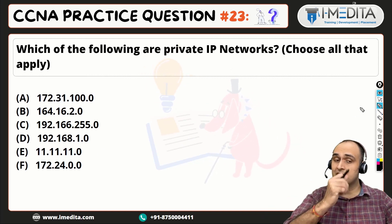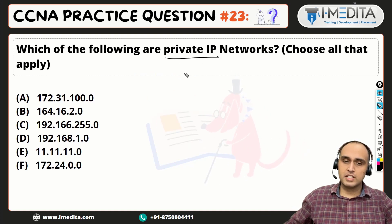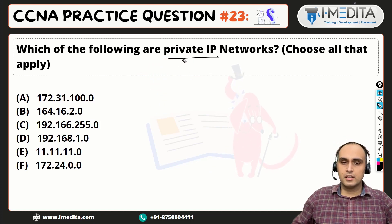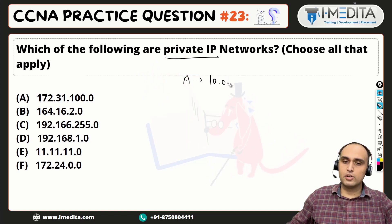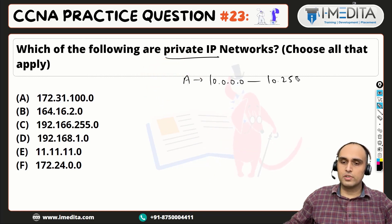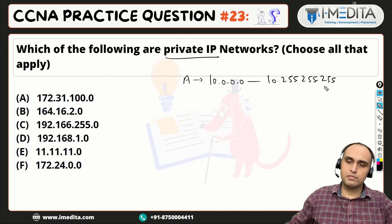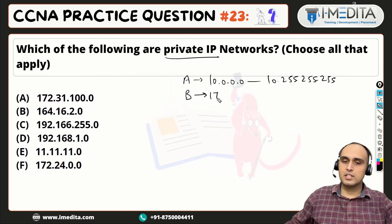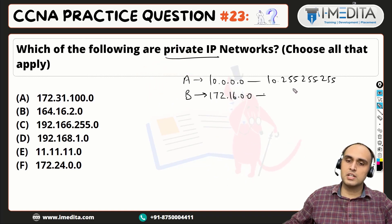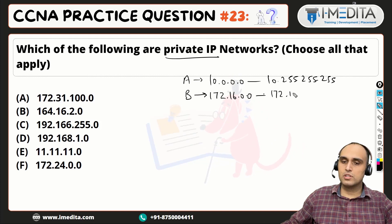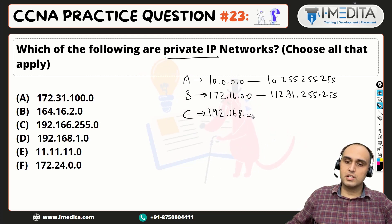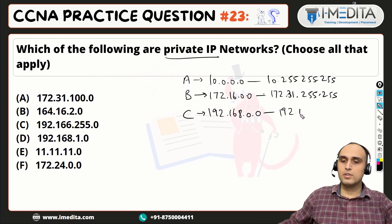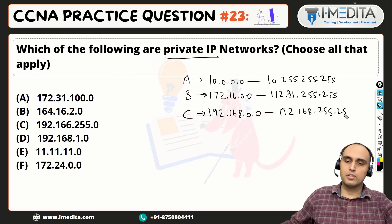To answer this question, we should remember the ranges of private IP — this is an RFC. In Class A, the range of private IP is 10.0.0.0 to 10.255.255.255. In Class B, the range is 172.16.0.0 to 172.31.255.255. And in Class C, the range of private IP is 192.168.0.0 to 192.168.255.255.